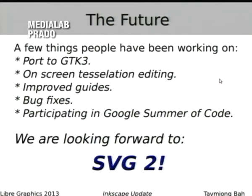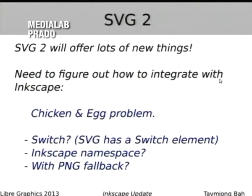Now let's talk about the future. Things people are working on include a port to GTK3, on-screen tessellation editing, improved guides, and of course more bug fixes. We're participating in Google Summer of Code this summer, so hopefully we'll have some nice projects from that. We're looking forward to SVG2 — it will offer us a lot, but we need to figure out how to integrate it. We can't export SVG2 if the browsers don't support the features — it's a chicken-and-egg problem.